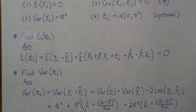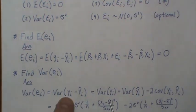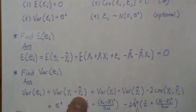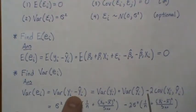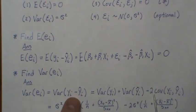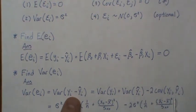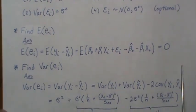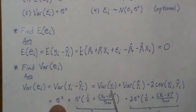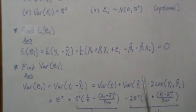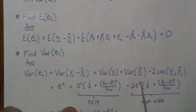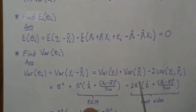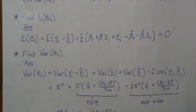The variance of our residual is: we take the variance of (Y minus the least squares line), which gives the variance of Y plus the variance of the fitted value minus two times their covariance. The variance of Yᵢ is σ², and the variance of the fitted line is given in previous video 14.